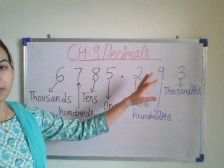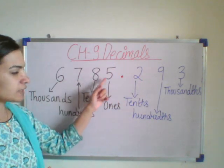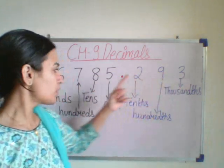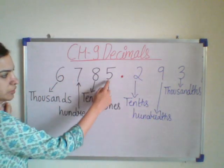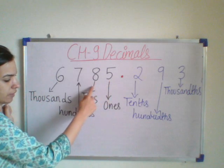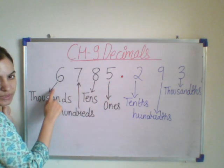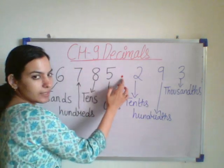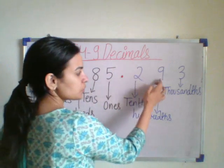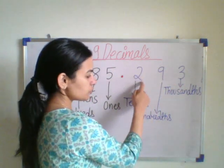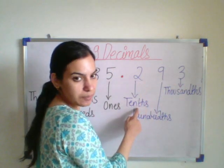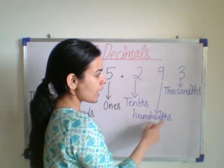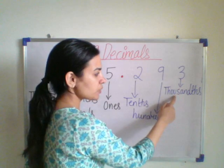Here I have written a digit that is 6785.293. Now this one — it is the ones, tens, hundreds, and thousands. So 6785 is the whole number. Then comes the decimal, that is 293. So this 2 is at the tenths place, 9 is at the hundredths place, and 3 is at the thousandths place.